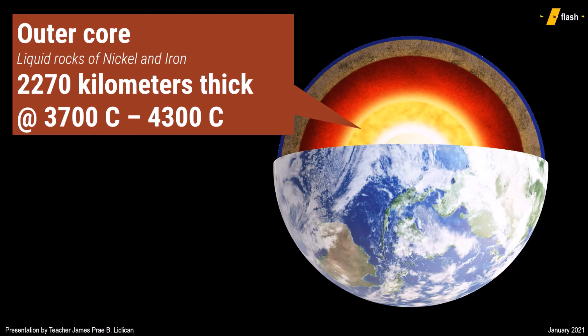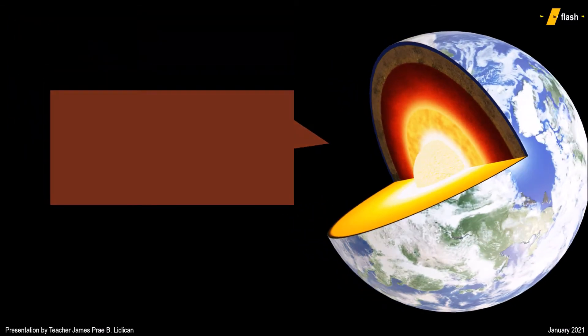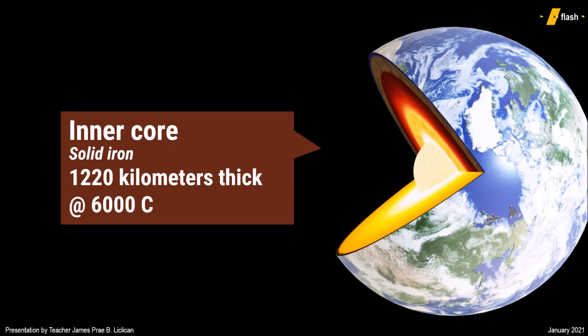Below the mantle is where the core exists. The core can be classified as inner core and outer core. The outer core is liquid, while the inner core is solid. The outer core is 2,270 kilometers in thickness and is the only layer of the Earth that is liquid. Made up of molten iron and nickel, its state of matter is caused by high pressure and heat at about 3,700 to 4,300 degrees Celsius, as influenced by the inner core that is at least 6,000 degrees Celsius in temperature.